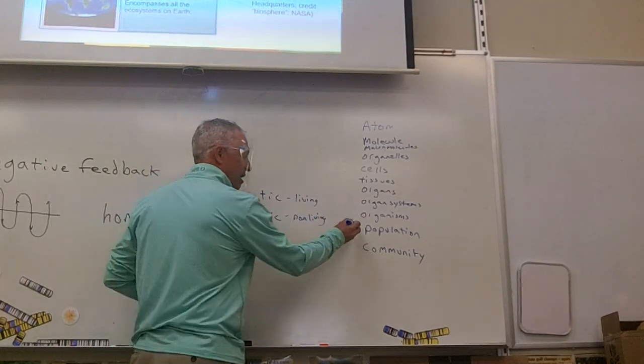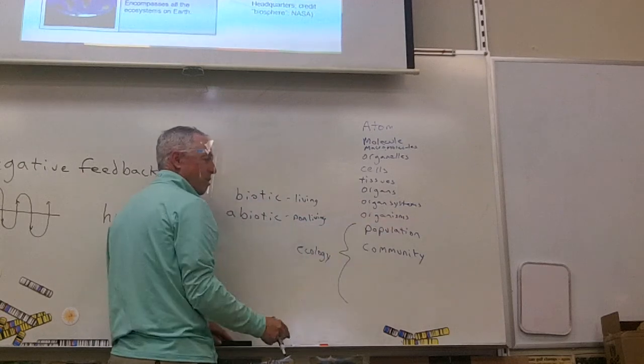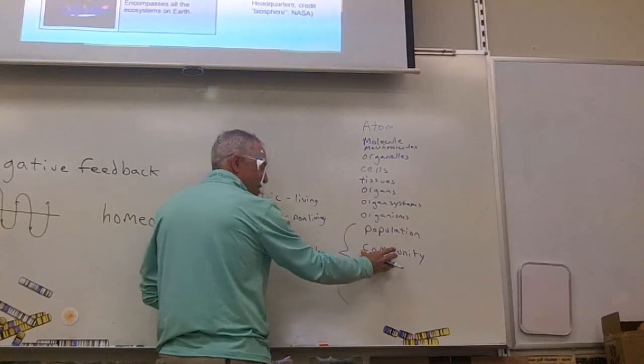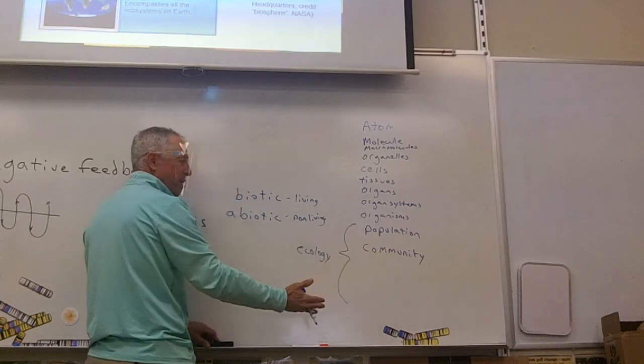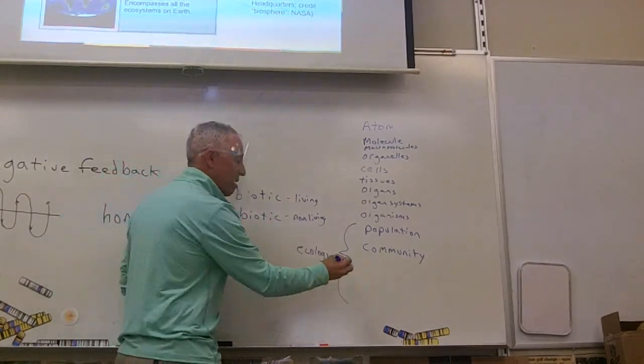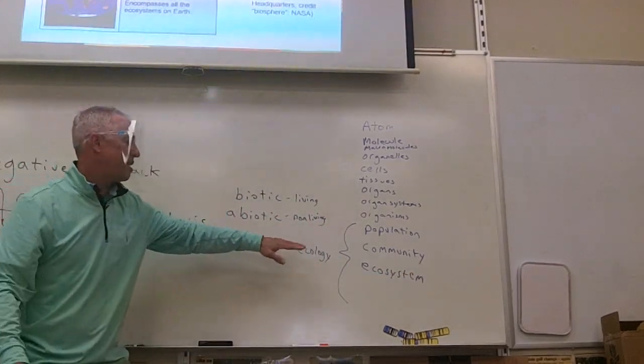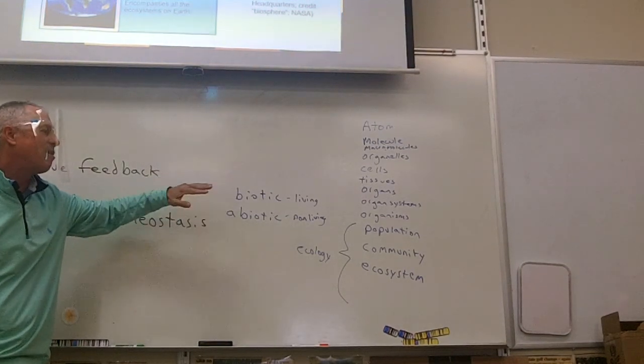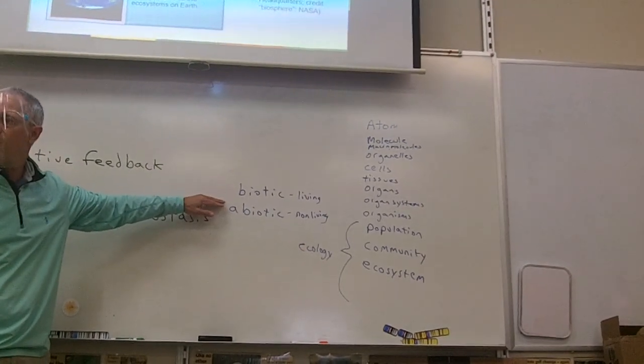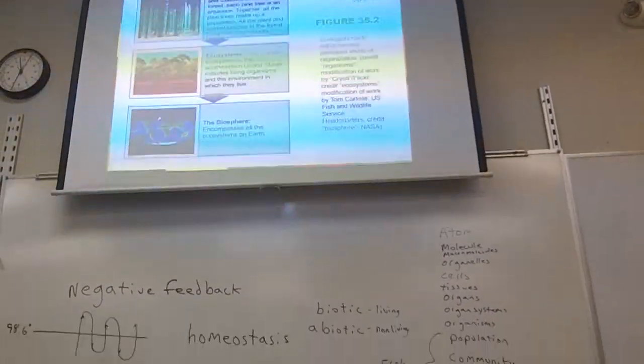Now we're in the ecology section. Everything here we're talking about is ecology. How populations interact with one another. Many different populations interacting make a community. If you consider the biotic living factors and the abiotic non-living factors, now you're talking about the ecosystem. We're not only talking about the living things, but the amount of water, the temperature, the air, what's in the soil, all the nutrients.